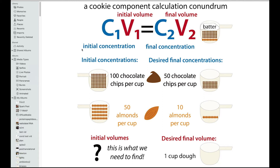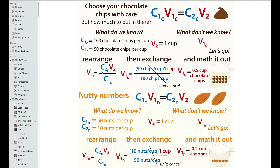We need to find the initial volumes. First, identify which variables you know: we know the initial concentrations, the final concentrations, and the final volume. We want to find the initial volumes. We have to split this into two equations — one to solve for the volume of cookies (V1c) and one for the volume of nuts (V1n).